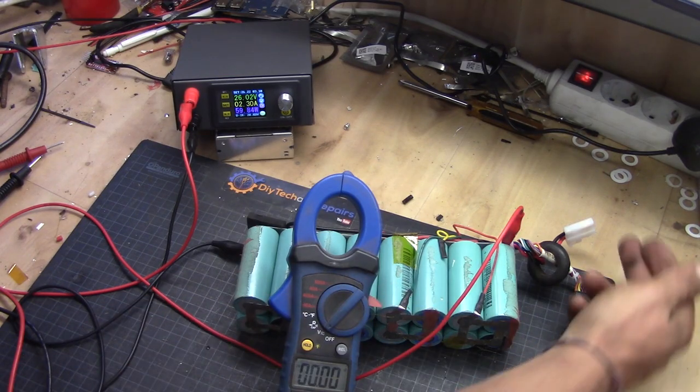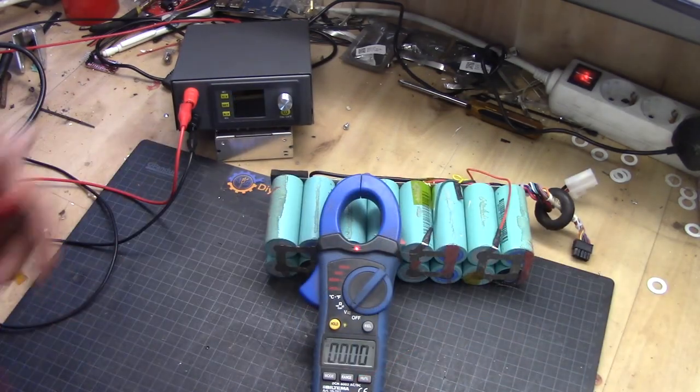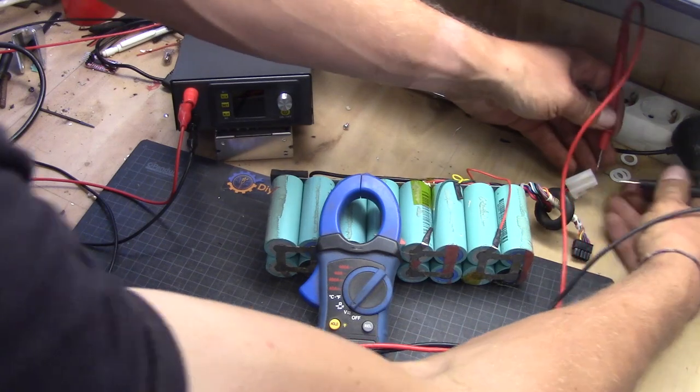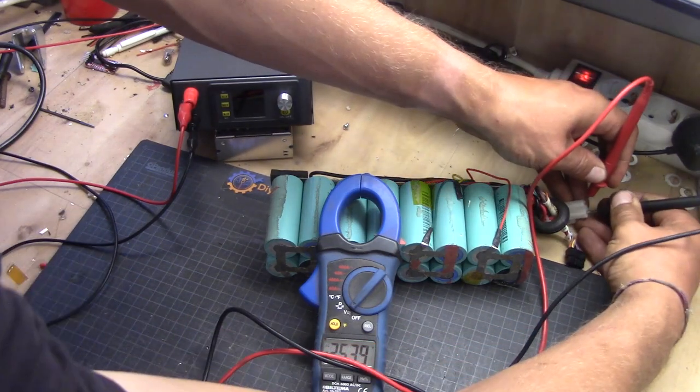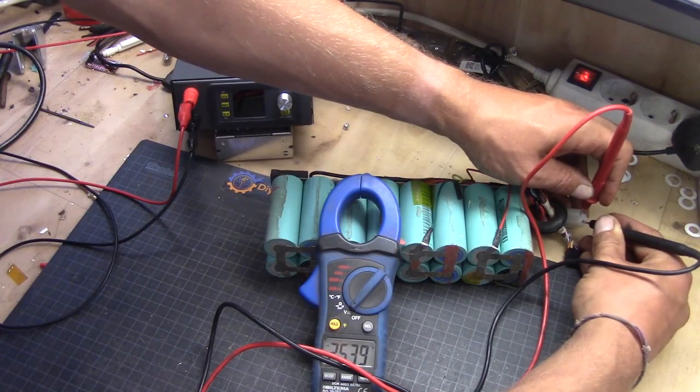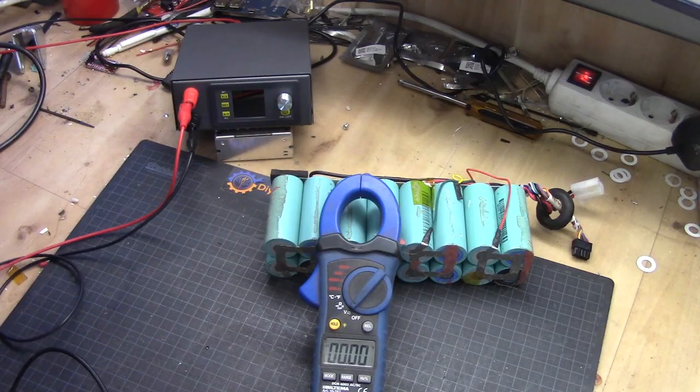And then we will go back and see if we can charge it via the BMS port instead. The pack have now been sitting after it have been charged. So let's see the voltage a little bit quick. And we can read 25.4 volt. So let's hook it up to the charger through the BMS port.